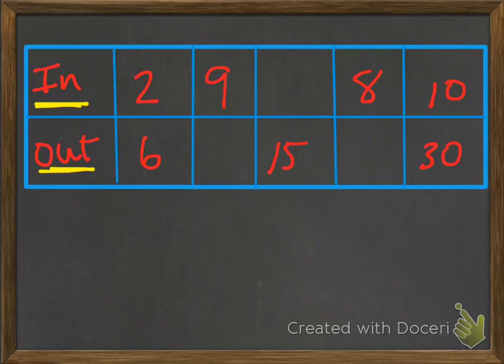All right. How did you do? Let's take a look. Well, if we look at the rule here, we go from 2, and we get 6. Well, what did we do? Well, we could add by 4, and we do get 6, but does that really help us out? Is that really the rule?